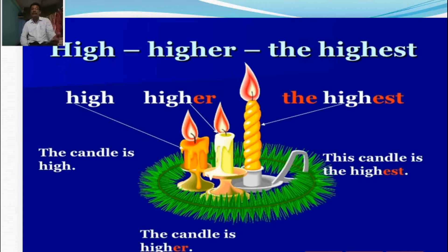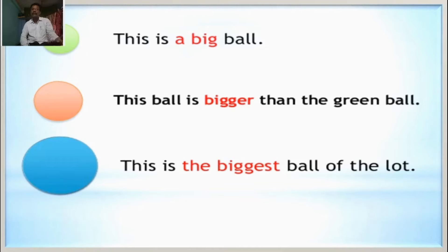Another slide: This is a big ball — positive degree. This ball is bigger than the green ball — comparative degree, comparing two balls. This is the biggest ball of the lot — superlative degree. So: the first one is positive, the second one is comparative, and the third one is superlative degree form.